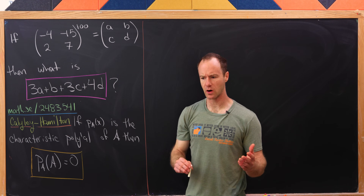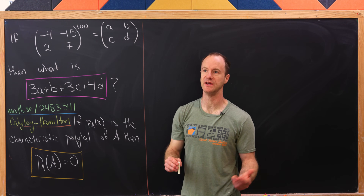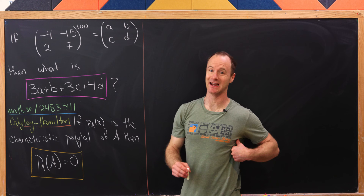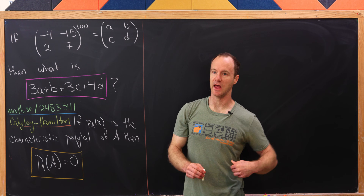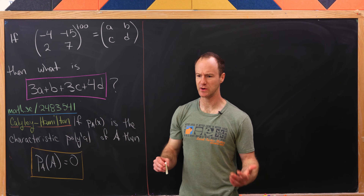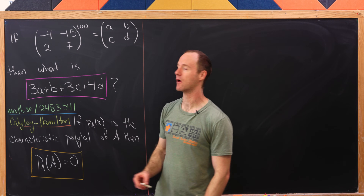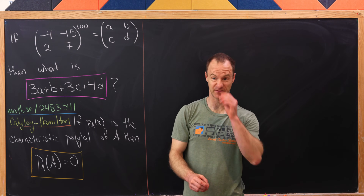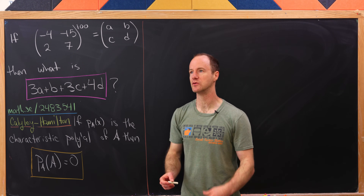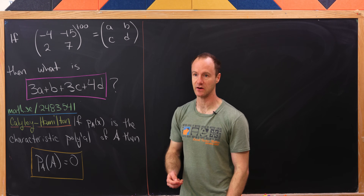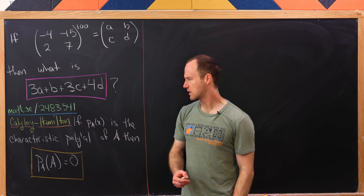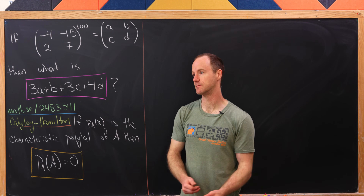There are a couple of ways you could do this. You could definitely use a diagonalization approach, which would allow you to find the power of this matrix fairly easily if you know something about eigenvectors and eigenvalues. But we're going to use something called the Cayley-Hamilton theorem.